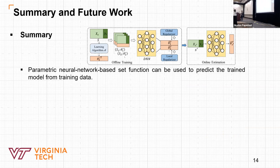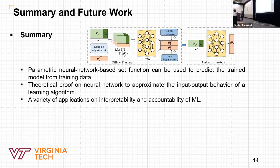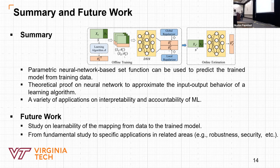In summary, we show that parametric neural network-based set functions can be used to predict the trained model from training data. We provide theoretical proof on neural networks to approximate the input-output behavior of a learning algorithm. We also show a variety of applications on interpretability and accountability in machine learning. For future work, apart from approximability, we will investigate a study on learnability of the mapping from training data to the trained model. We will adjust our method from a fundamental study to specific applications in related areas, including robustness and security.